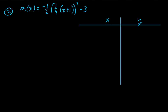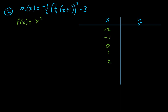For example two, we have m(x) = -½(¼x + 1)² - 3. The core parent function is f(x) = x², the basic parabola. Plugging in x values of -2, -1, 0, 1, 2, we get y values of 4, 1, 0, 1, 4, giving us the original parabola.